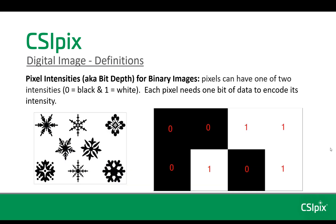Now we'll get into pixel intensities, also known as pixel bit depths. Pixel intensities for binary images can only have one of two intensities: either 0 for black or 1 for white. Each pixel only needs 1 bit of data to encode its intensity. This is a binary image — a black and white image. Here I've shown some pixels and their corresponding pixel intensities: black is 0, white is 1. Binary images are mostly used for graphics and forms and are not a significant image type for forensics.